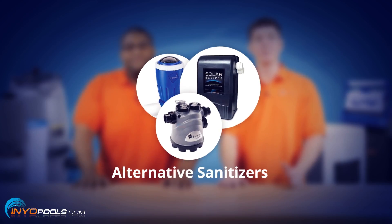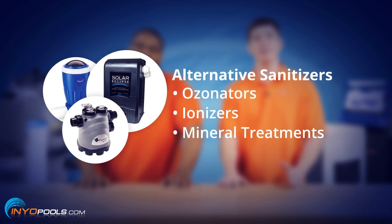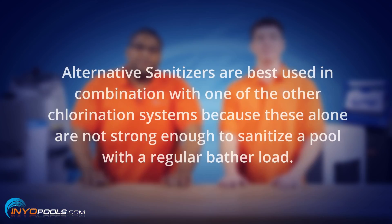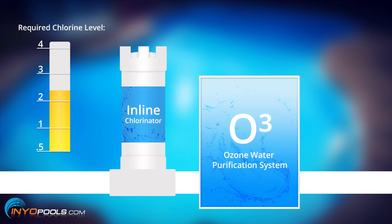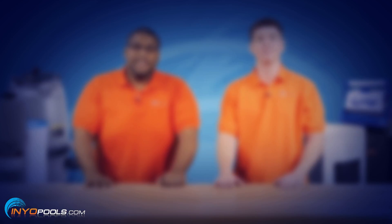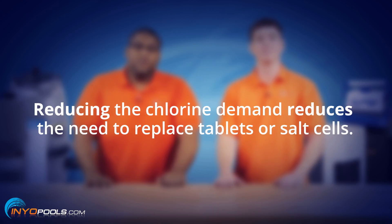Alternative sanitizers are great for people who are sensitive to chlorine. These alternatives include ozonators, ionizers, and mineral treatments like Nature 2 systems. In our experience, these options are best used in combination with one of the other chlorination systems, because these options alone are usually not strong enough to sanitize a pool with a regular bather load. What these systems allow you to do is dramatically reduce the chlorine level in the pool. A normal chlorine level in a pool is 2 to 4 parts per million, but with an alternative sanitizer, you can keep the chlorine level at 0.3 to 0.5 parts per million — basically tap water. Another benefit is that by reducing the chlorine demand, you reduce the need to replace chlorine tablets or salt cells.